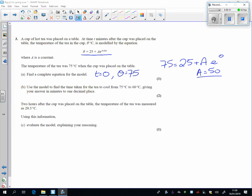So I'd write out the complete formula now, just with the 50 in it there. Now use your model to find the time taken down to 60 degrees, so I'm now going to put the 60 degrees where the theta is. So 60 equals 25 plus 50e to the minus 0.03T.